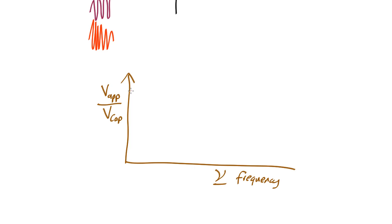What you'll find is that when the frequency is very low, they're the same, they've got a value of about one. The amplitude of one is about the same as the amplitude of the other.